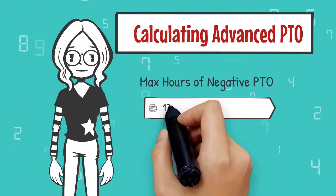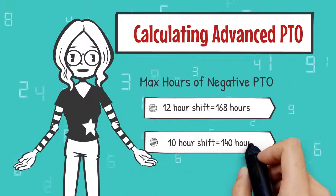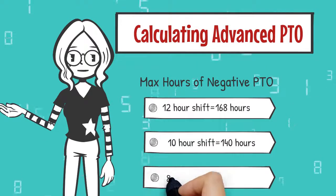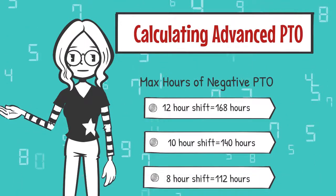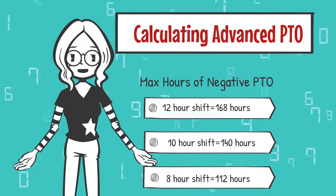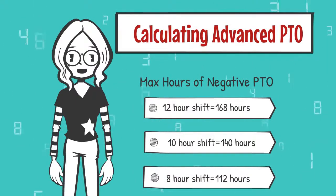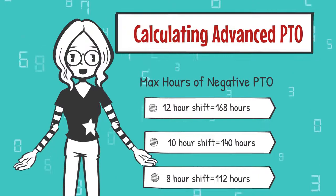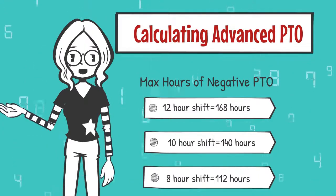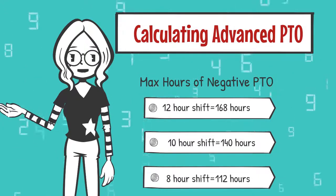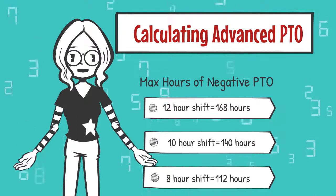Calculating the Advanced PTO Option can be challenging. Luckily, here are the guidelines: for a 12-hour shift, the max is 168 hours; for a 10-hour shift, 140 hours; and for an 8-hour shift, the maximum is 112 hours.